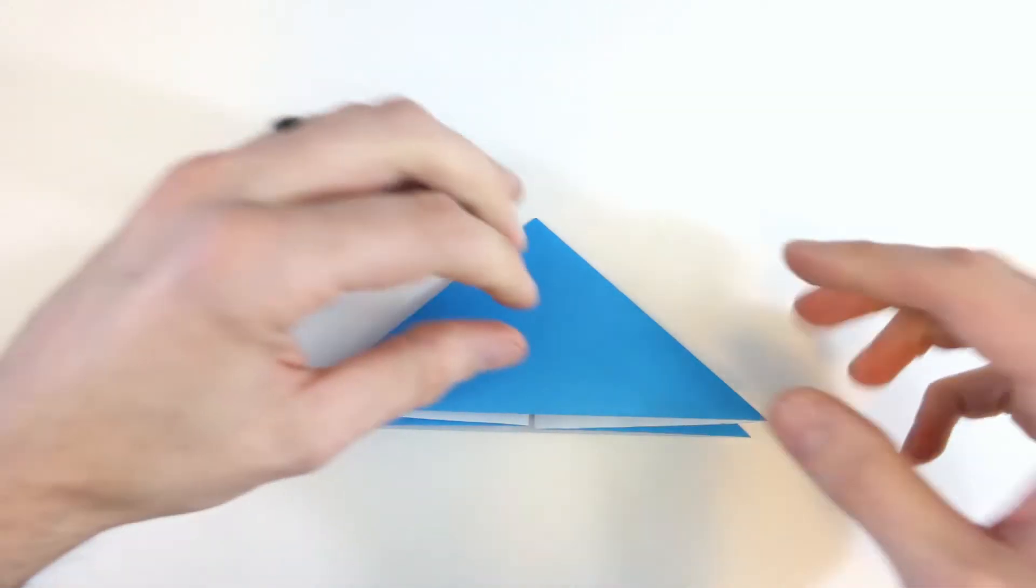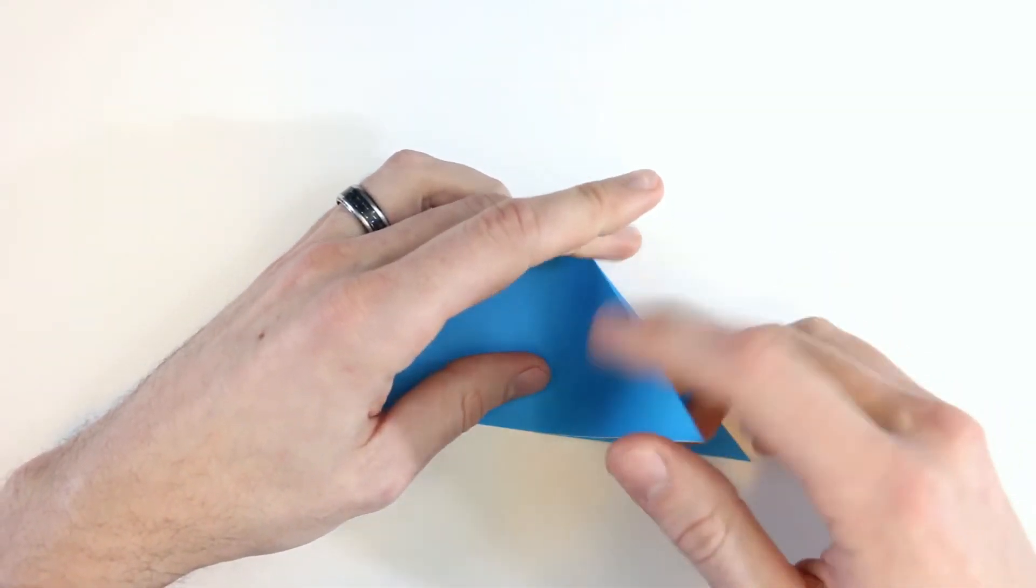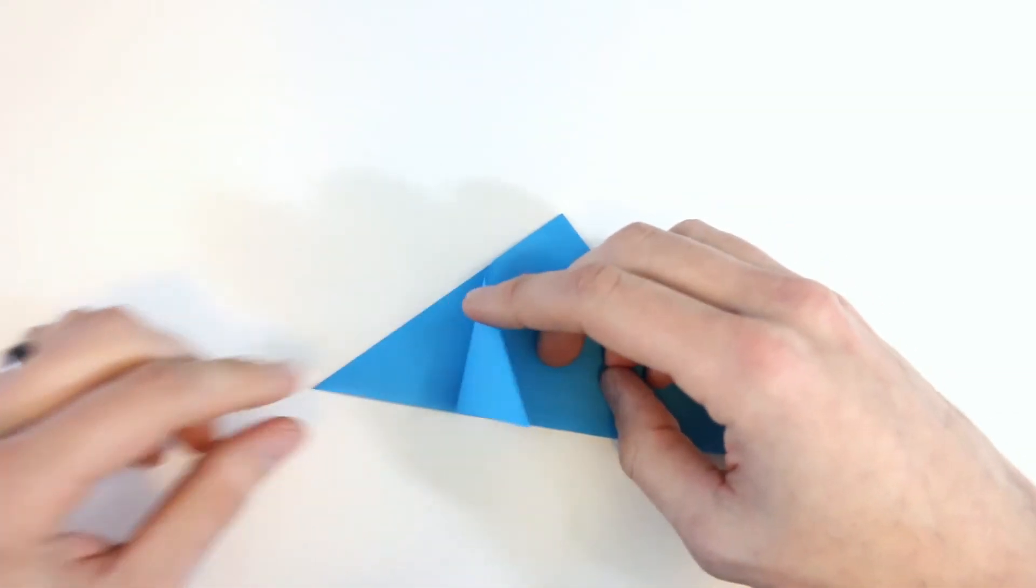Now it should be symmetrical. There should be two flaps on the right side and then two flaps on the left side.